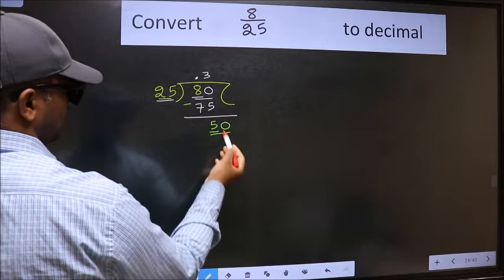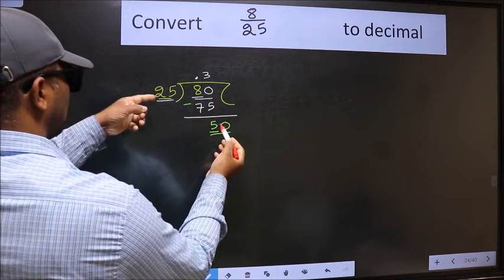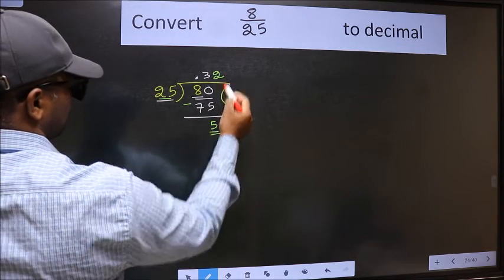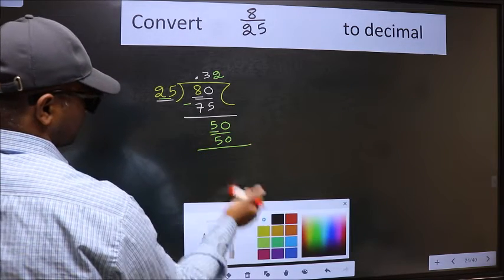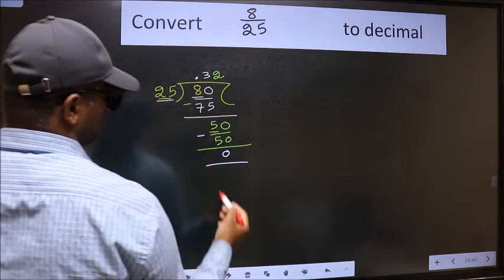So, 50. When do we get 50 in the 25 table? 25 twos, 50. Now we should subtract. We got 0.